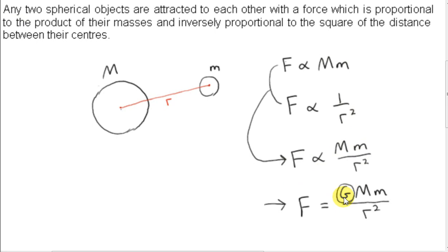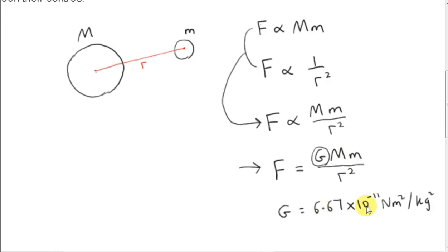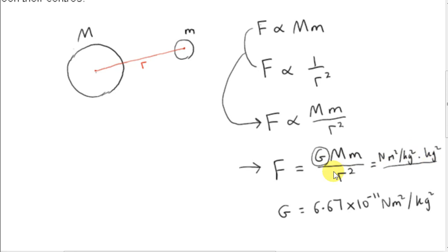The constant of proportionality here has the value 6.67 times 10 to the minus 11, denoted by capital G. The units are Newton meters squared over kilograms squared. That makes sense because this entire quantity must have units of Newtons since it's a force. Big M is so many kilograms, little m is so many kilograms — kilograms times kilograms gives kilograms squared. And underneath we have distance squared, which is meters squared. The meters squared cancel out, the kilograms squared cancel out, and we end up with units of Newtons.